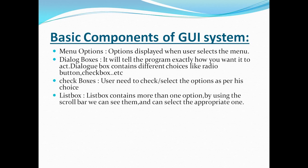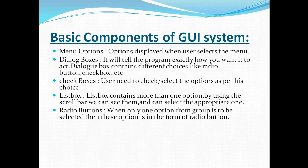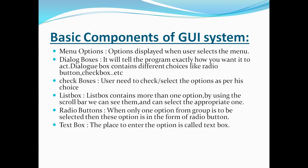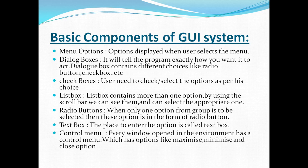List box is like a menu list that contains more than one option. By using the scroll bar you can see them or set properties option. Radio buttons - when only one option from a group is to be selected, the option is in the form of a radio button. Text box is where you can enter the option. Control menu - every window open in the environment has a control menu with maximize, minimize, and close options.